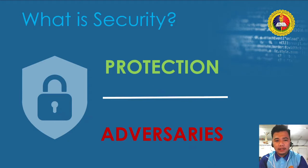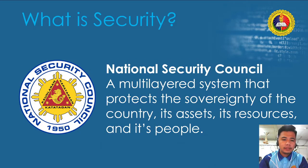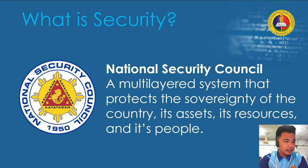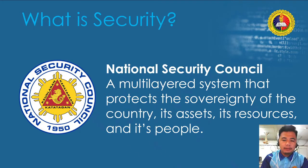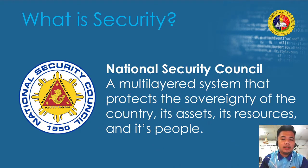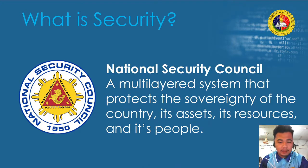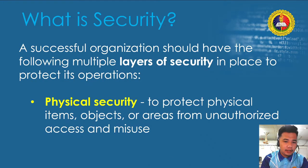That is the objective of security: protection against adversaries. The National Security Council, or NSC, is a multi-layered system that protects the sovereignty of the country, its assets, resources, and people. When we say multi-layered system, it means multi-purpose and multi-dimensional. Achieving the appropriate level of security for an organization also requires a multi-faceted system — having multiple features or aspects.